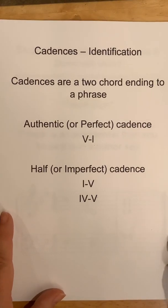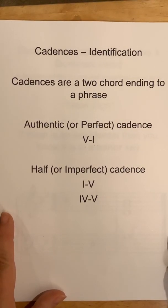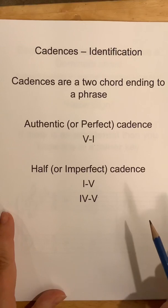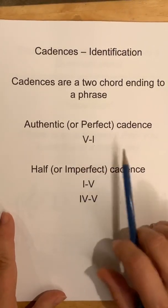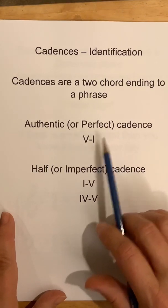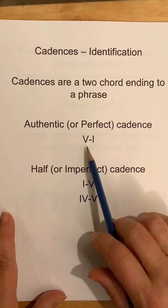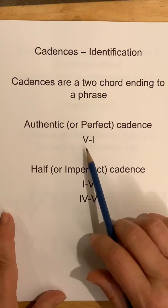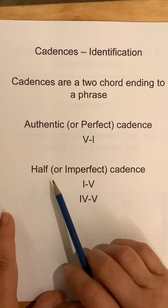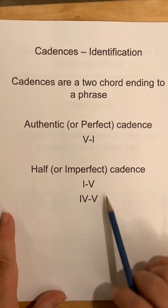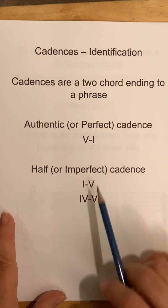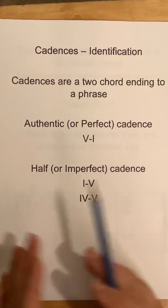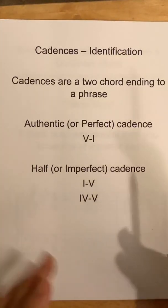For our purposes in this video, we're going to be talking about three different cadences. One: the authentic cadence, also known as the perfect cadence — it's 5 to 1, a dominant triad going to a tonic triad. And then there's the half or imperfect cadence, of which we're looking at two: a 1 to 5 or a 4 to 5 — tonic going to dominant, or subdominant going to dominant. These are chords side by side that finish off a phrase.